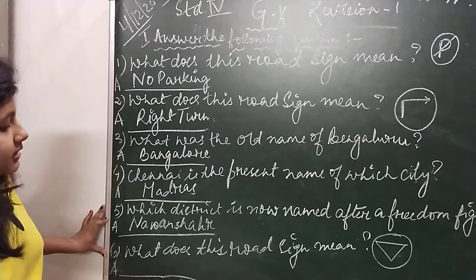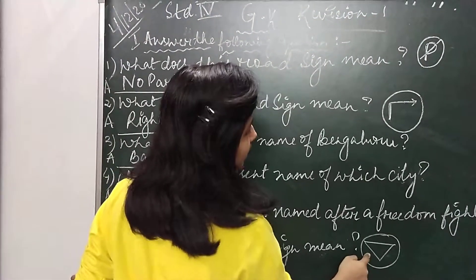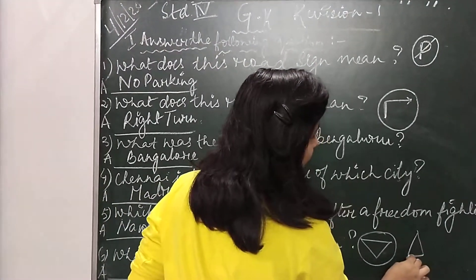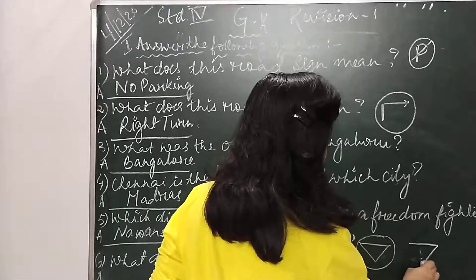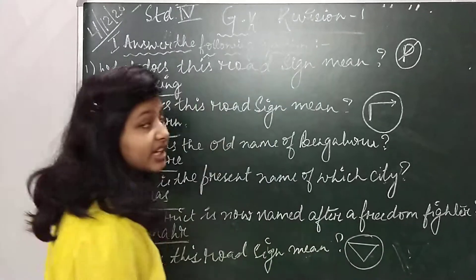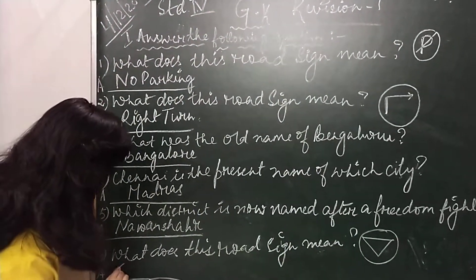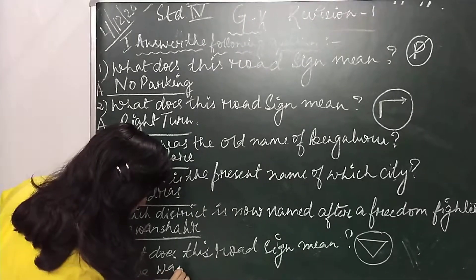So children, the fifth question is, what does this road sign mean? So children, there is an inverted triangle. You know, a triangle is like this, but now I have drawn it the opposite way. So children, this sign means give way, G-I-V-E, give way.